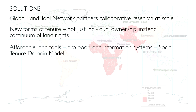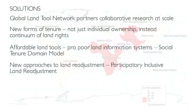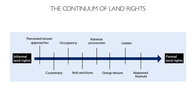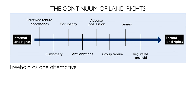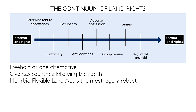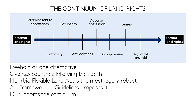These new forms of tenure should be along a continuum of land rights. The tool here is the Social Tenure Domain Model. We also need new forms of land readjustment that are both participatory and include appropriate financial models, and citywide slum upgrading which requires fixing the systems. On the continuum of land rights, people can incrementally improve their land rights over time, with freehold being one alternative. 25 countries are already on this path — the best example being the Namibia Flexible Land Act. The African Union and European Commission support this approach, and we've seen a global paradigm shift.